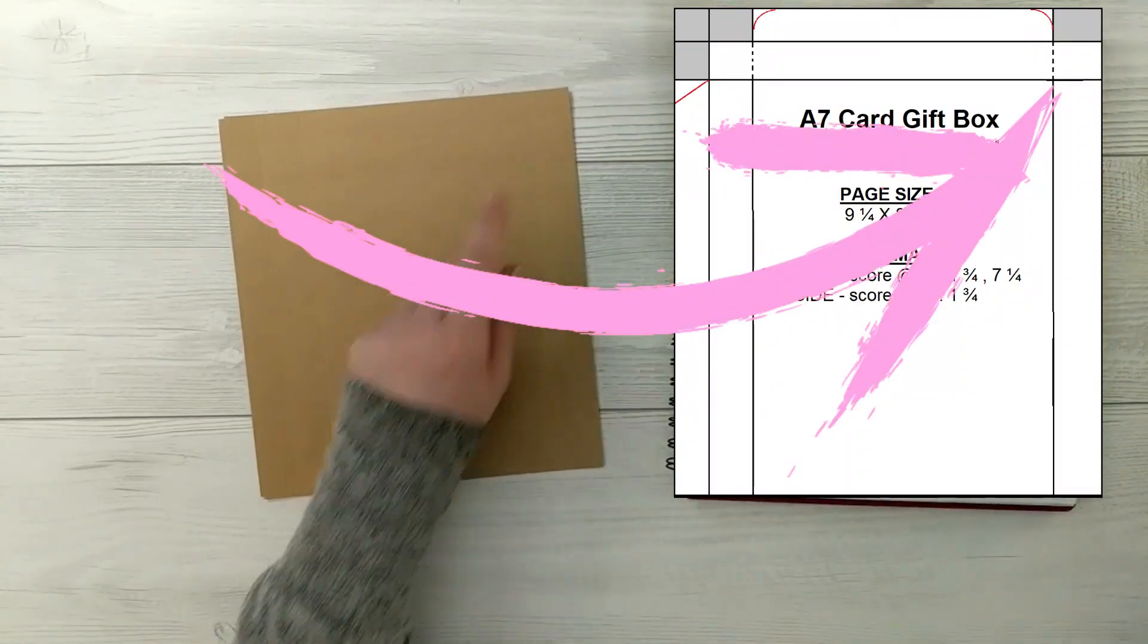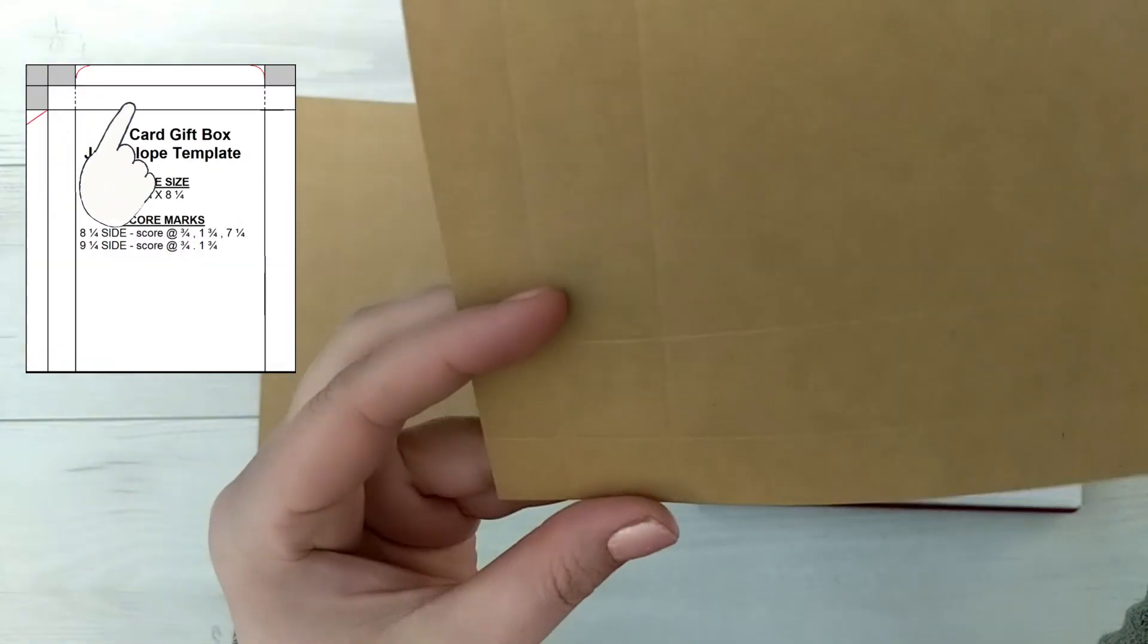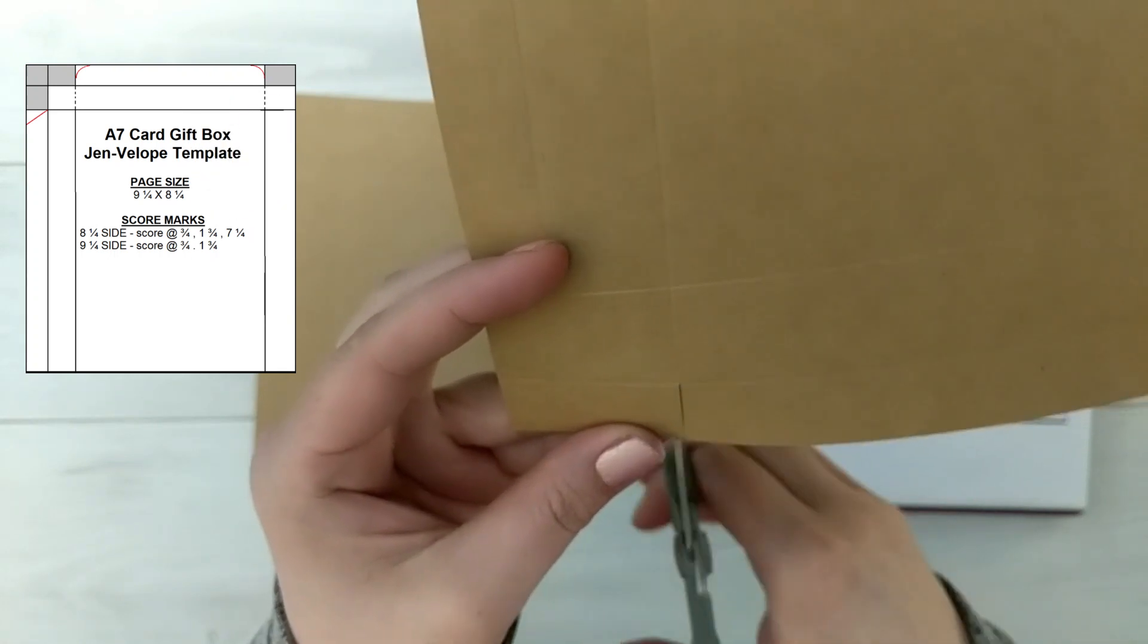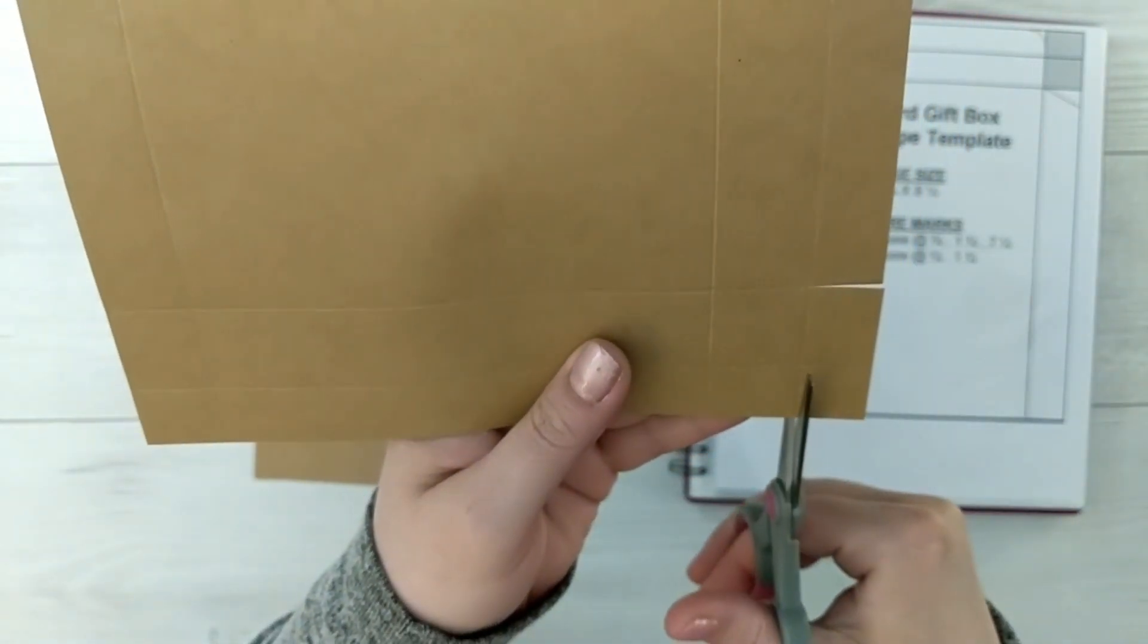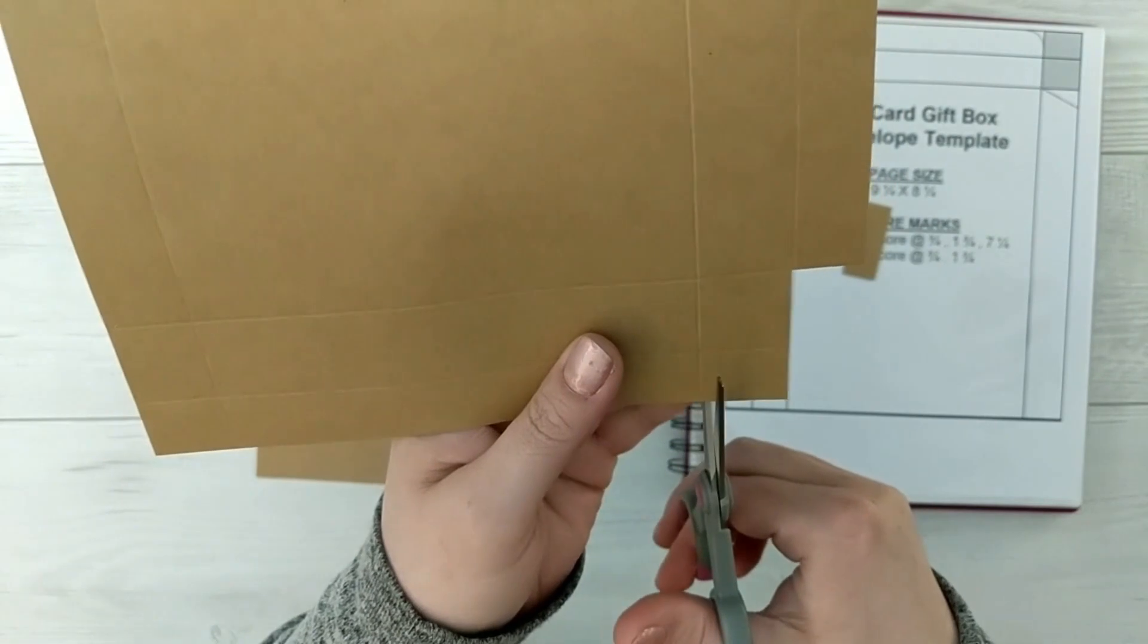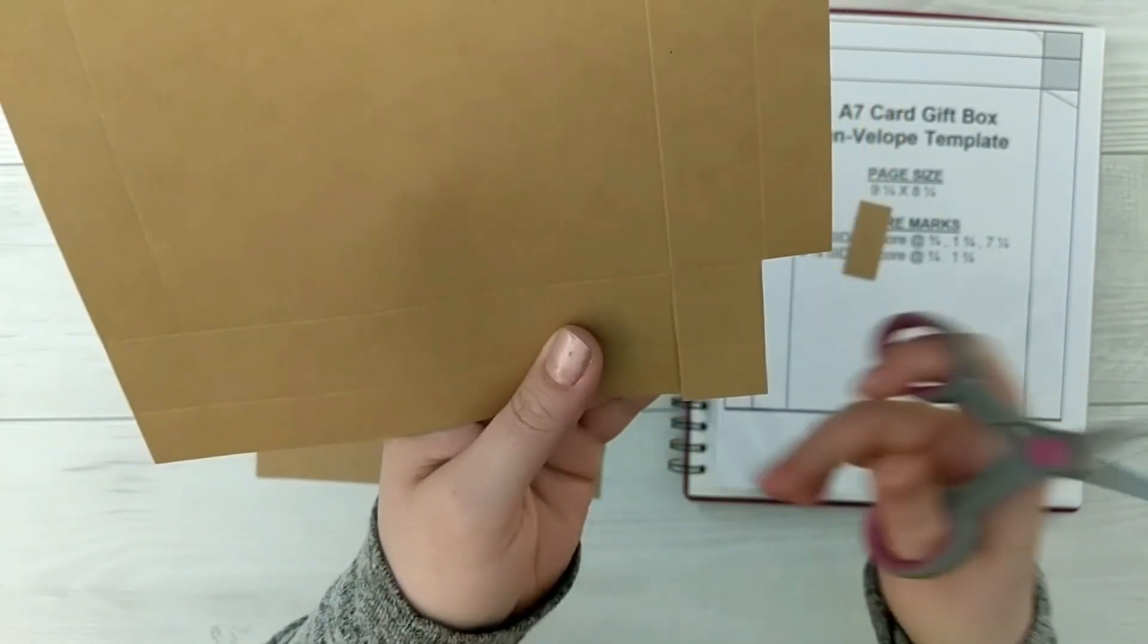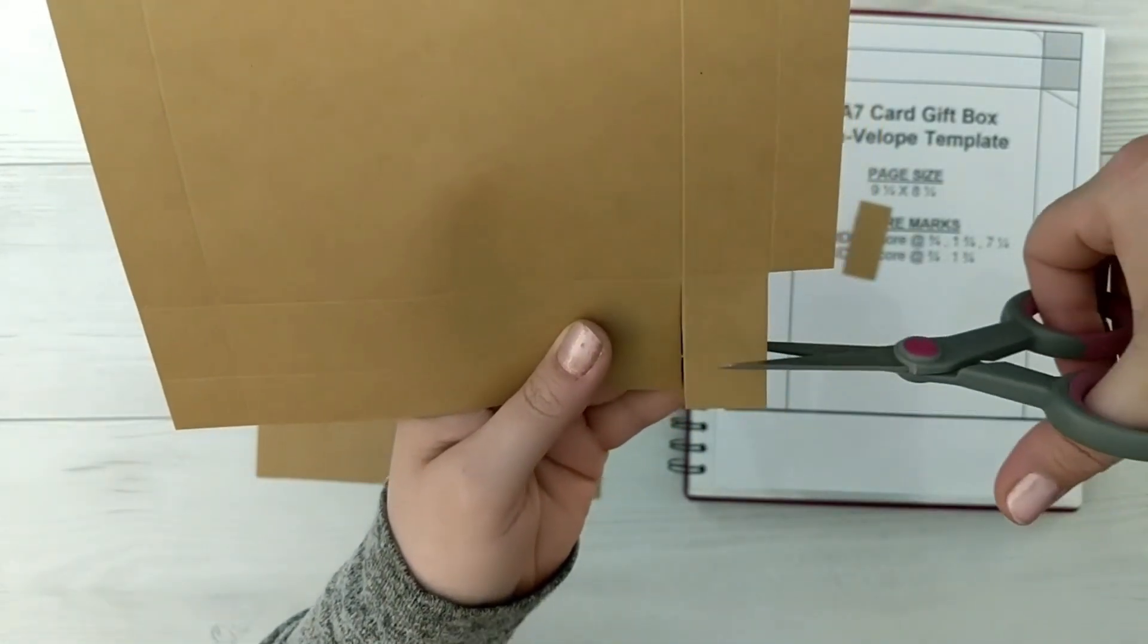You'll see the score marks here on the template, they're marked in gray areas. You're going to cut on the second score mark into that first score mark, and then you'll rotate your cardstock and cut down to the second score mark. And now here you're going to trim down to the second score mark and you're only going to make a cut on the first score mark. You're going to cut that piece off and we're going to leave that little flap there.